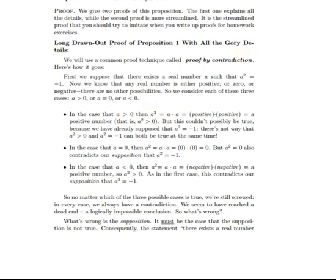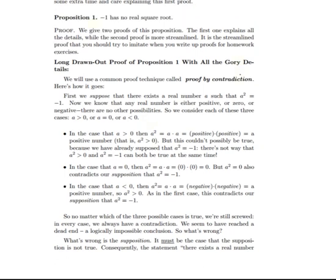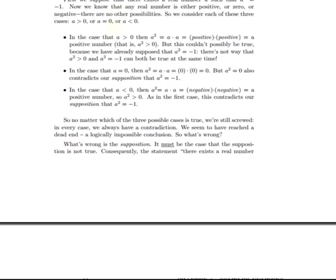So, let's go back to the statement that we're trying to prove. Minus 1 has no real square root. What that means is there's no real number such that that real number squared is equal to minus 1. That's really what this is saying. That's what we mean by a square root. There's no real number which, when squared, gives you minus 1. So, let me go to the second proof and see how that works, this proof by contradiction.